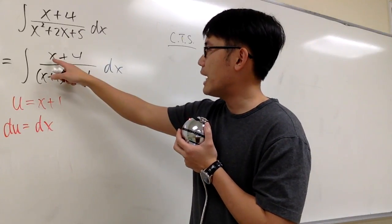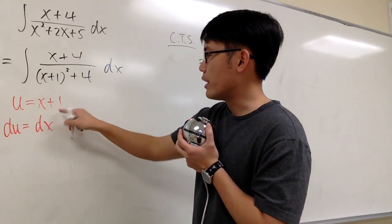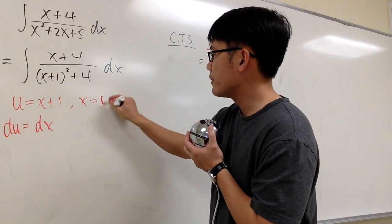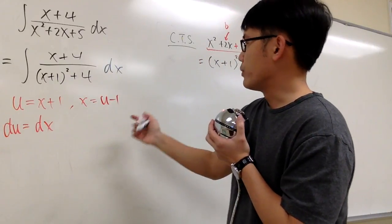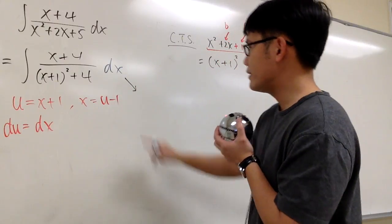And this is going to be u squared plus 4 on the denominator, that's good. But on the top, I have the x. If you see, u is equal to x plus 1, that means x will be u minus 1. So I can take this integral into my u world, and let me just put it down right here, diagonally.